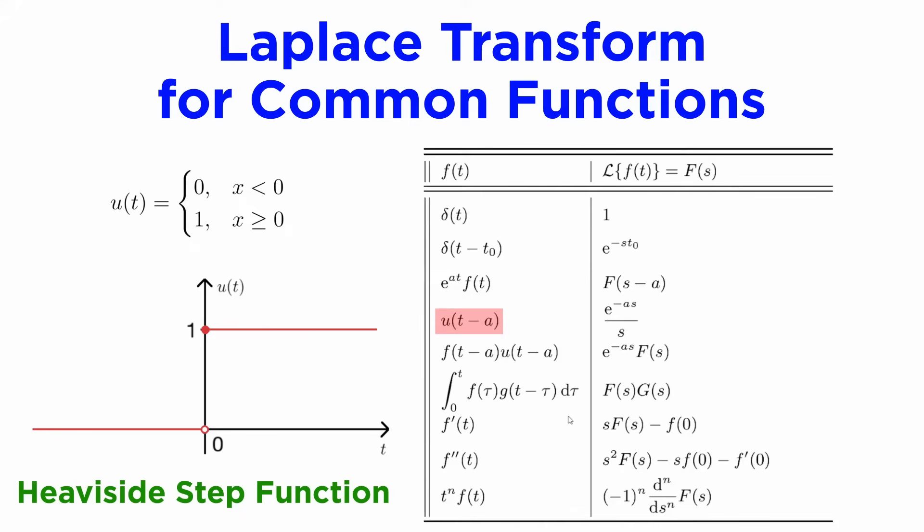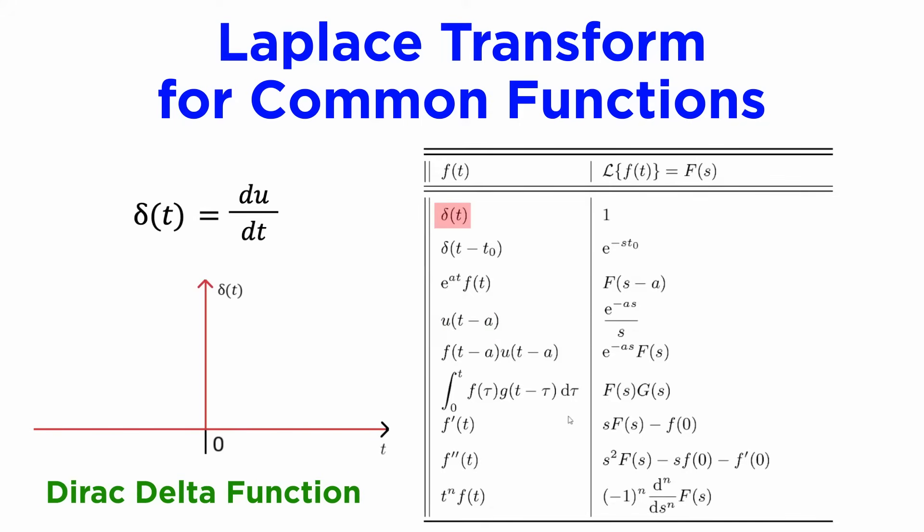In the right column, we can see the Heaviside step function u of t, which is a piecewise function with the value 1 for positive t and 0 for negative t, and also the Dirac delta function delta of t, which is a special function that can't be written down nicely but will be extremely useful as we will see in the next tutorial.